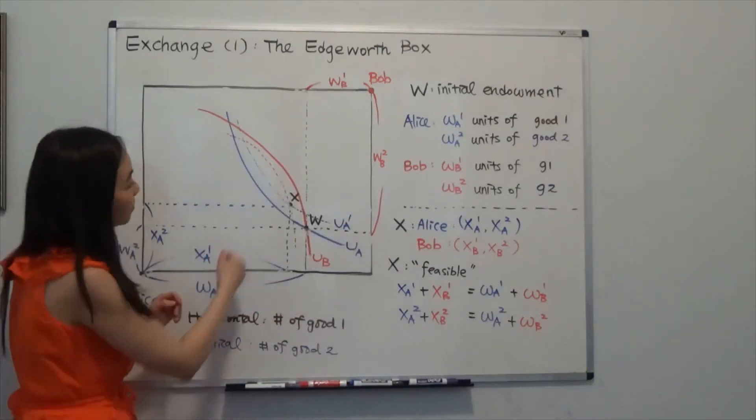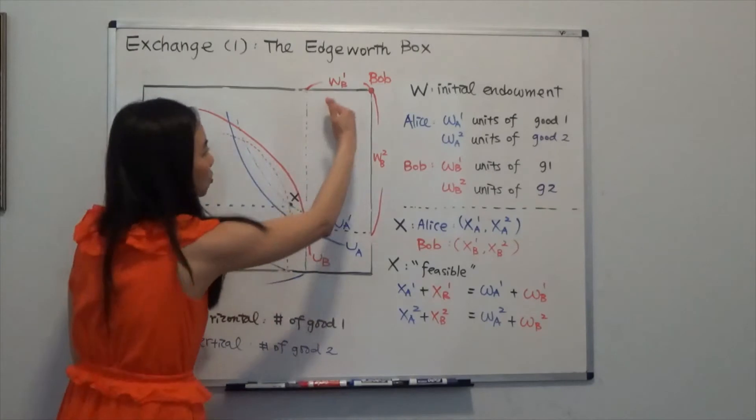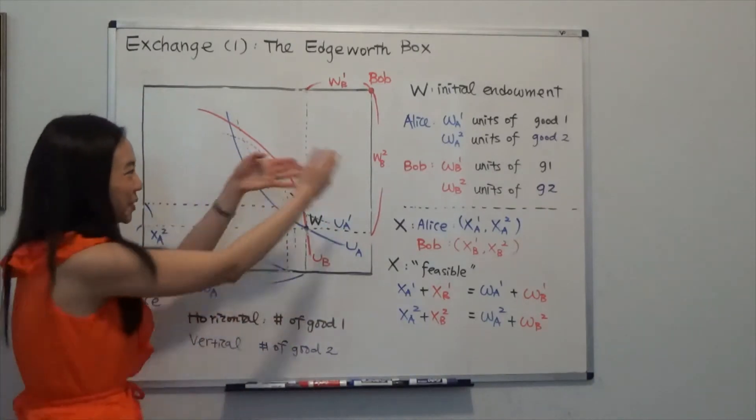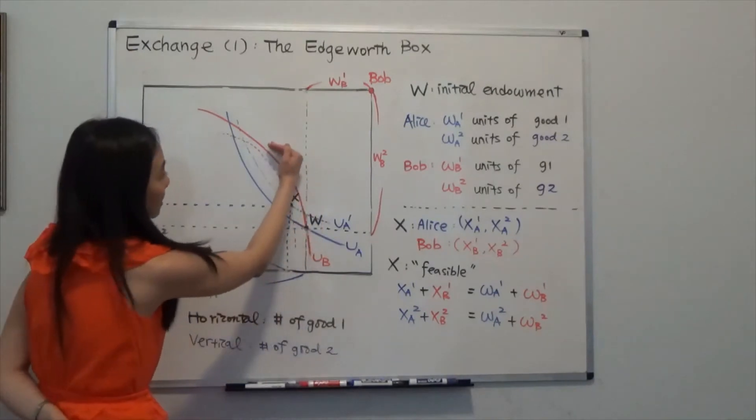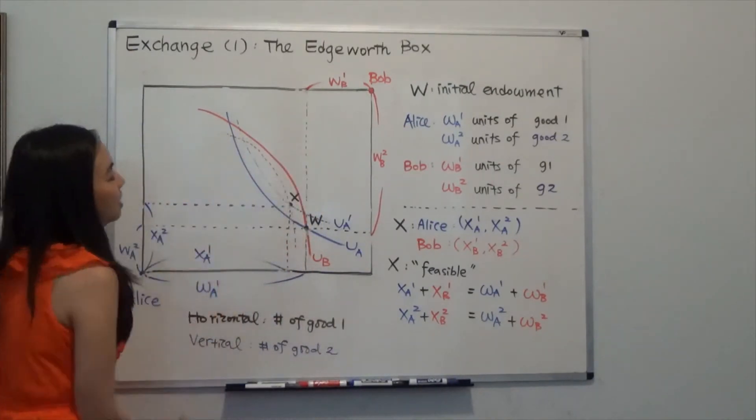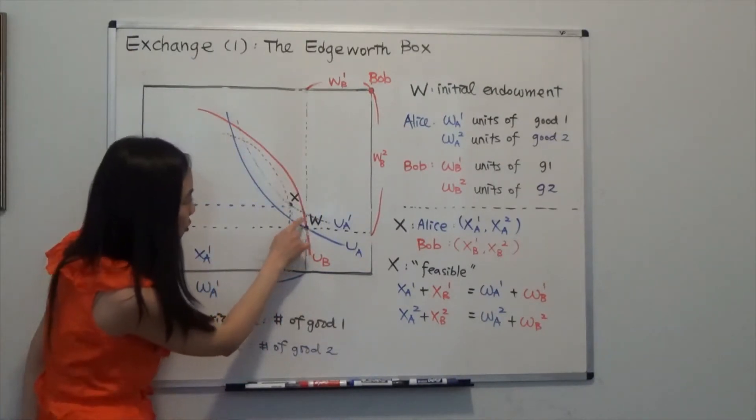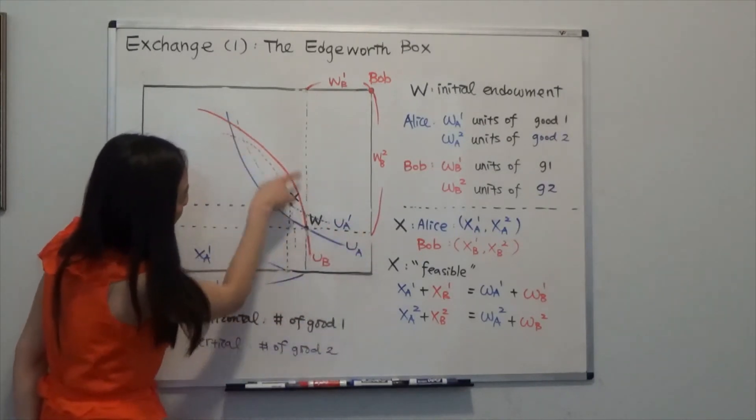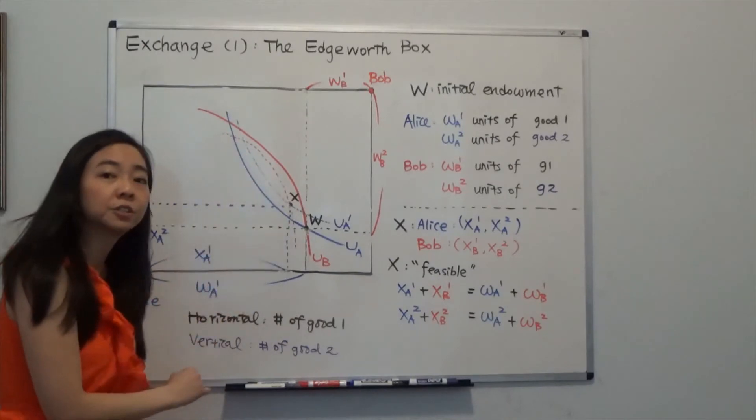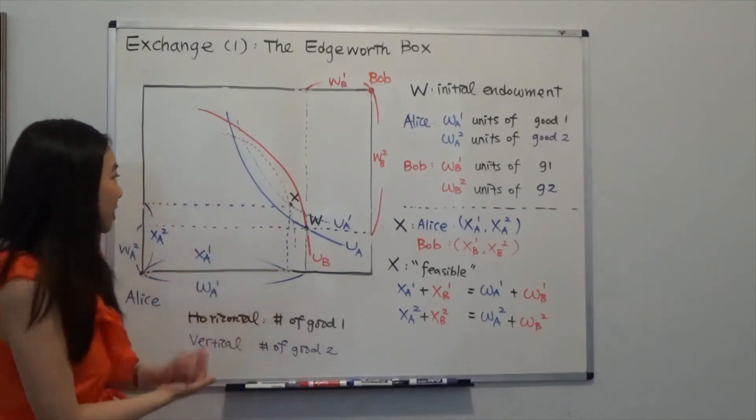We know for Alice, the indifference curve is better this way. And for Bob, it will be the other way around. For Bob, he is doing better if his indifference curve is moving this way. So you can see from point W to point X, both Alice and Bob has their indifference curve improved. And therefore, they're both doing better.